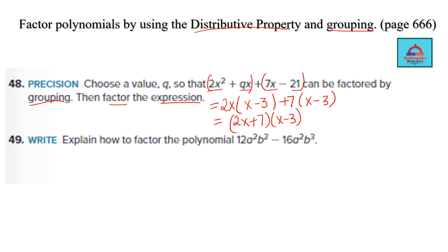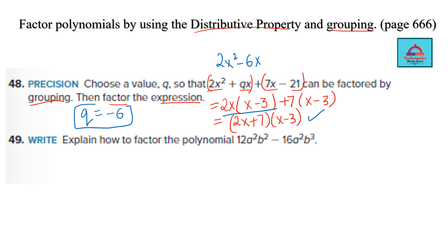To find the value of q, we expand the first bracket: 2x² − 6x. Comparing, we see that q is equal to −6. That completes part one. Now let's apply the same technique — factorization by grouping and distributive property — to the next polynomial.